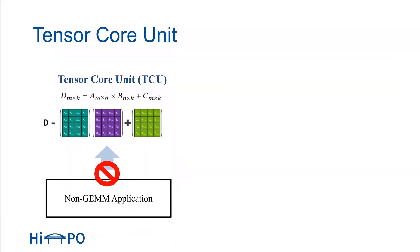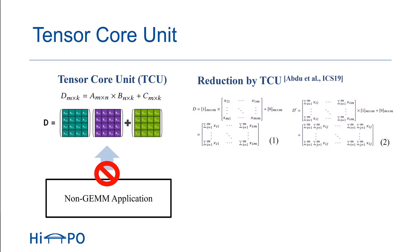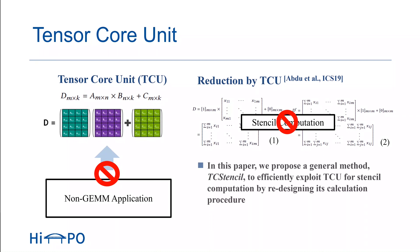Although the tensor core can greatly accelerate GEMM applications, it is difficult to benefit non-GEMM applications. Existing work explores the tensor core for accelerating scan and reduction by constructing a special form of GEMM. For example, as shown in equations 1 and 2, the reduction can be realized by two GEMM operations on the tensor core. However, this method is hard to apply to stencil computation because of the irregular computation patterns of the stencil, and thus accelerating stencil computation with tensor core has not been explored yet. In this paper, we propose a general method, TC-Stencil, to efficiently exploit the tensor core unit for stencil computation by redesigning its calculation procedure.